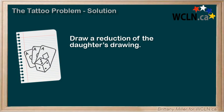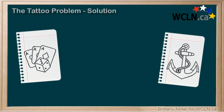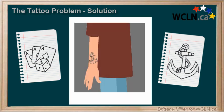He wants his daughter's drawing to be reduced by the same amount that his son's drawing was reduced by in his other tattoo. In other words, we need to find the scale factor by comparing the son's drawing to that tattoo.